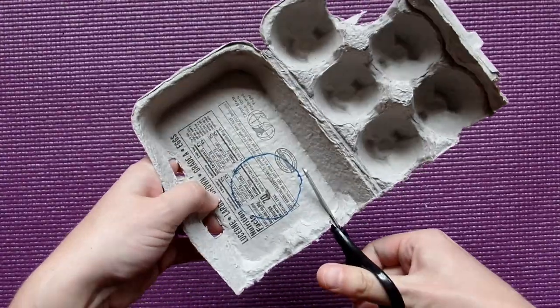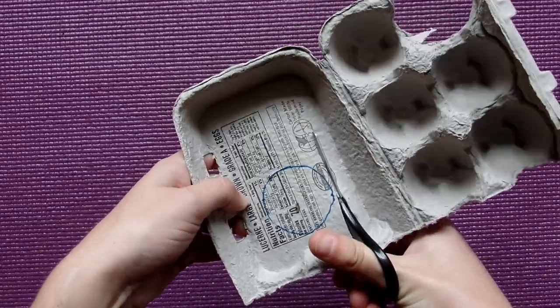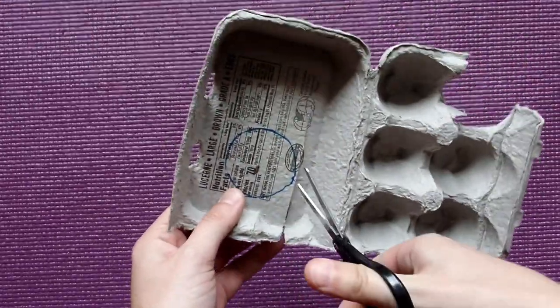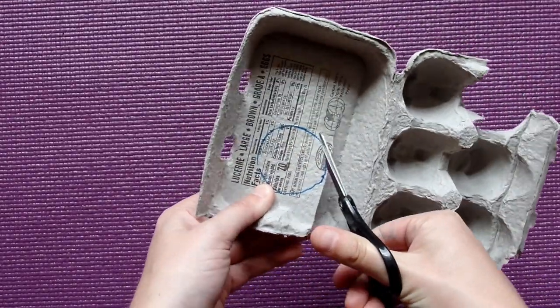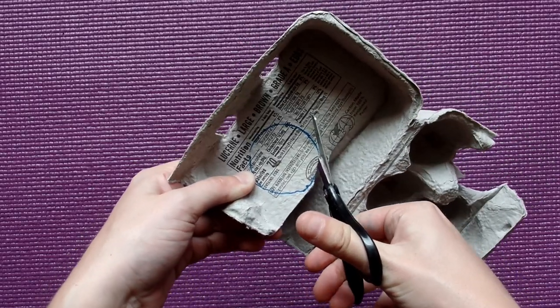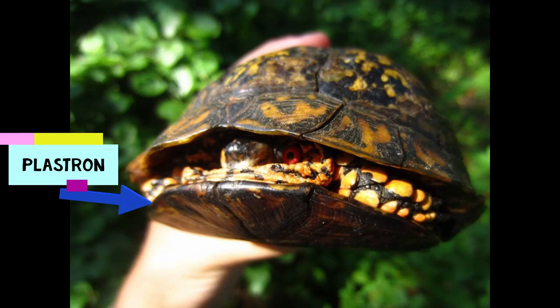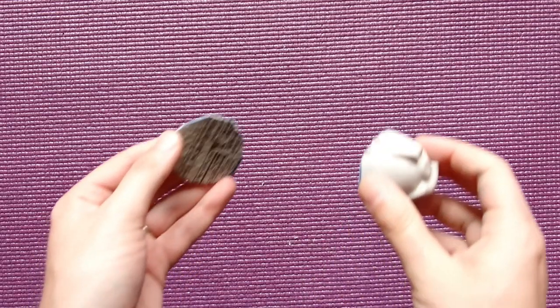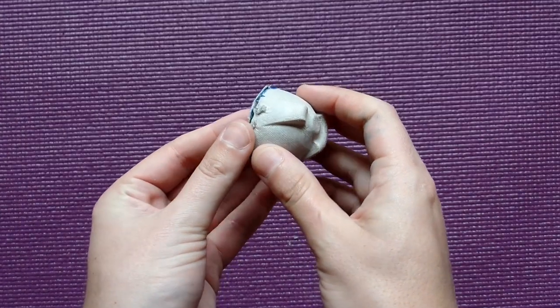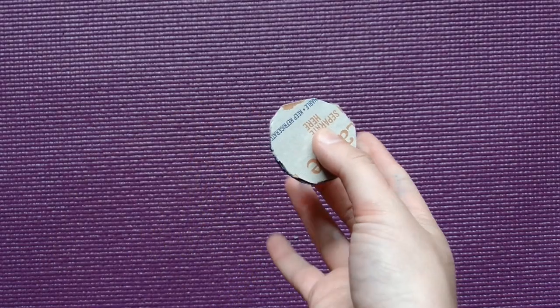Some turtles are able to go completely inside their shells like our box turtle and these turtles actually have a hinge on their plastron that closes all the way up. I'll just make sure that my plastron fits right underneath my carapace and it does. Perfect!